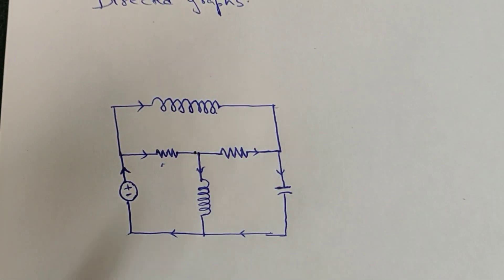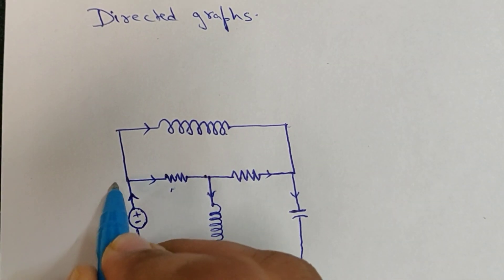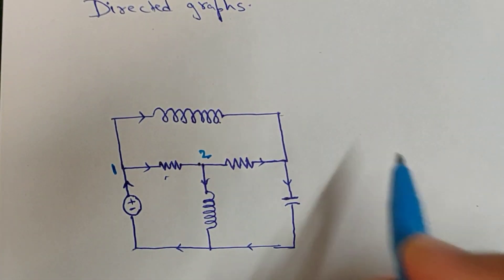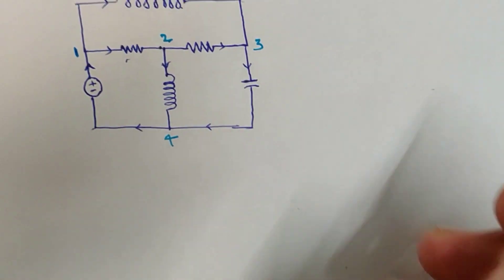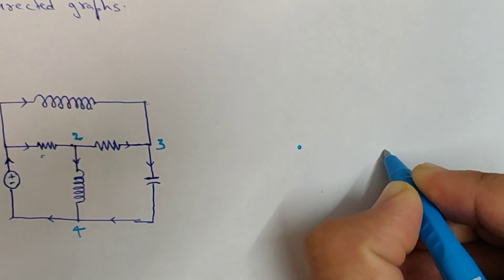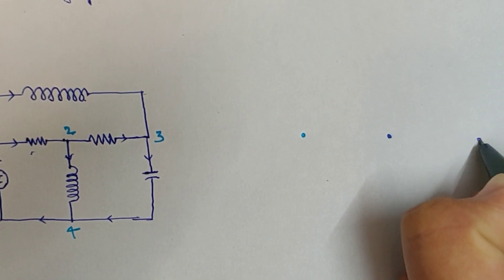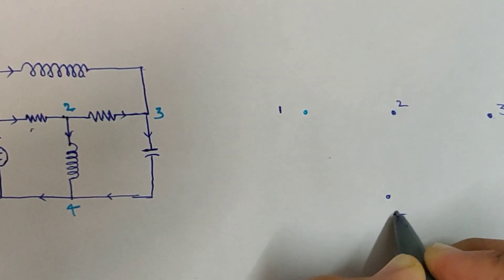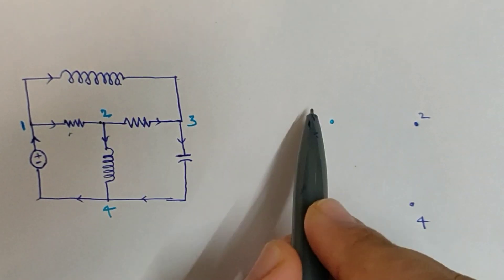The direction of current will be given in the question. First we will name the node points. I'll use a different color pen — let's name them one, two, three, four. These are the four node points we have named. We draw these node points: point one, point two, point three, and point four.